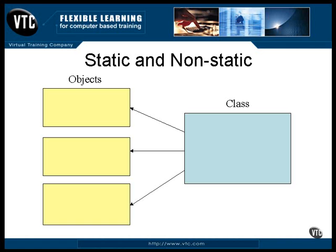Let's start with the data. If you declare a data item as static, it will exist in the class and not be duplicated in each object. Every object of the class can address the data item, but there is never more than one copy of it, and all the objects share it. If you don't declare a data item as static, then every time an object is instantiated, a new copy of the data is created.